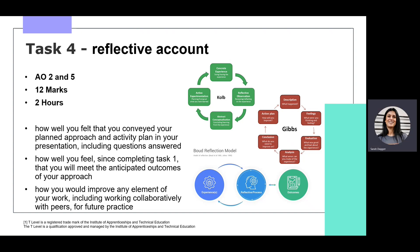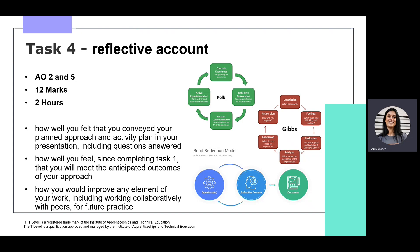Task 4 is a reflective account of the student's ESP journey. They have two hours to complete the reflective account and should ensure that they cover each of the bullet points in the brief: how well they felt that they conveyed their planned approach and activity plan, how well they feel since completing Task 1, how they meet the anticipated outcomes of their approach, and how they would improve any element of their work.